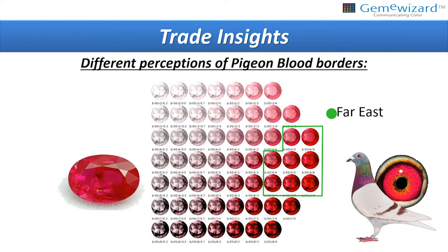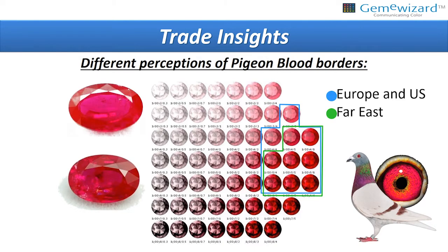Another thing is pigeon blood. We didn't go to Europe and the Far East and slaughter pigeons to see the color. What we did is check the perception of the dealers — what do you mean by saying pigeon blood? We found that in the Far East, certain Gem eWizard colors are considered pigeon blood. And to our amazement, in Europe we found that Europeans accept also an additional two lighter colors as pigeon blood, while in the Far East those are not accepted.